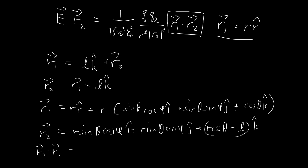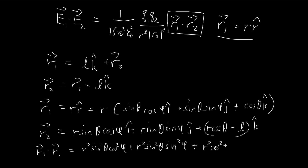Now that we have r1 and r2 we can evaluate the dot product by matching terms: i with i, j with j, k with k. This gives r² sin²θ cos²φ plus r² sin²θ sin²φ plus r² cos²θ minus rl cosθ. Pulling out r² sin²θ, the sin²φ plus cos²φ equals 1, and similarly sin²θ plus cos²θ equals 1, so the dot product simplifies to r² minus rl cosθ.